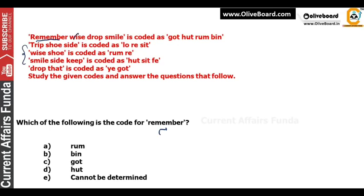Here is 'wise', here is 'drop', here is 'smile' — okay there are three. So here is 'got' and 'got'. H-U-T, hut; R-U-M; and here is B-I-N. So option number B is the correct answer — here is B-I-N.